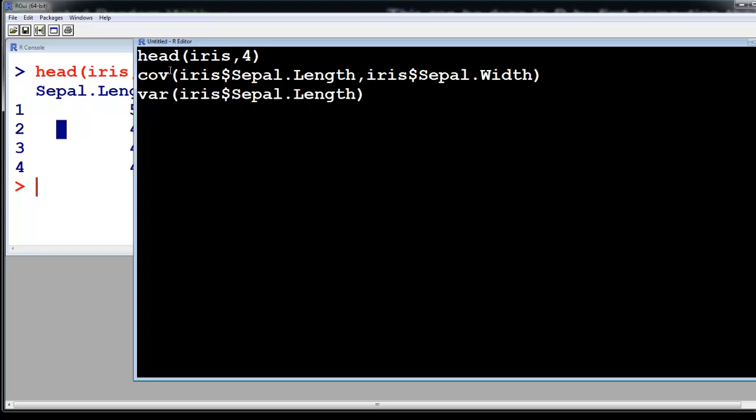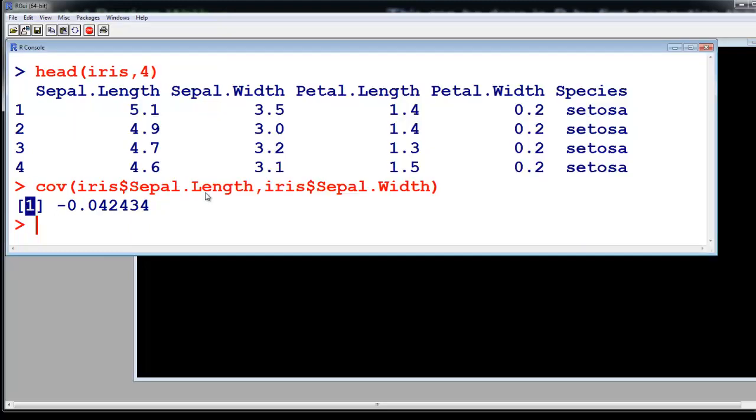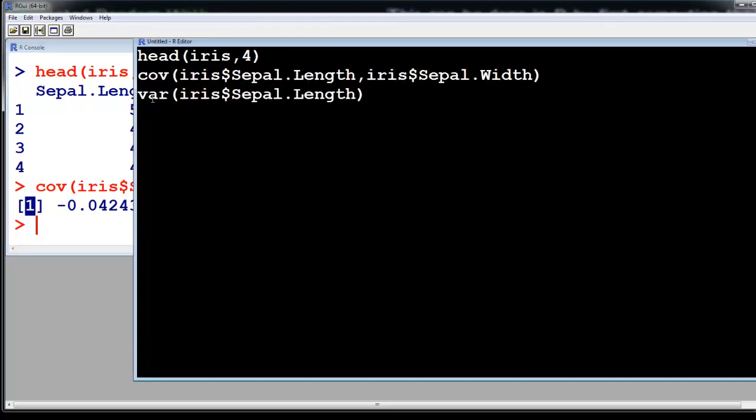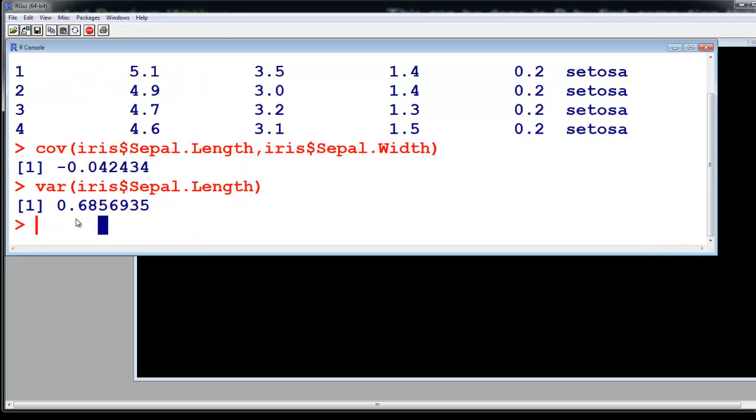Very simple. You just select this and run it and you get the covariance between two columns. If you want to get variance, just type var(sepal length) and then run this and you get the variance. If you take covariance of sepal length with sepal length, you will again get the variance. That is it.